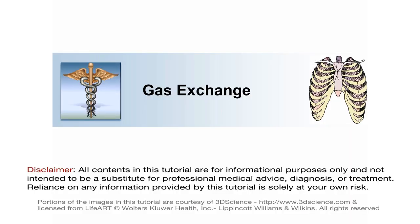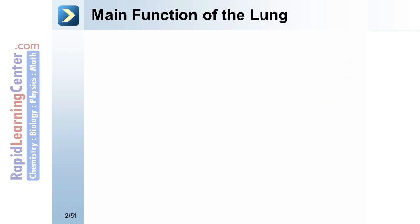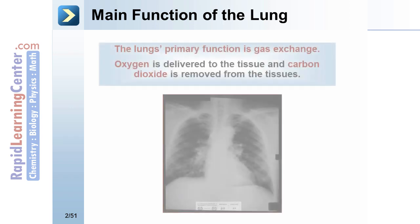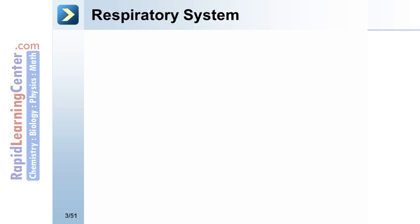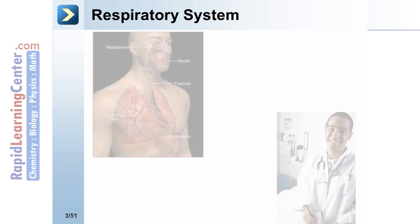Gas exchange is the main function of the lungs. The lung's primary function is gas exchange: oxygen is delivered to tissues and carbon dioxide is removed from the tissues.